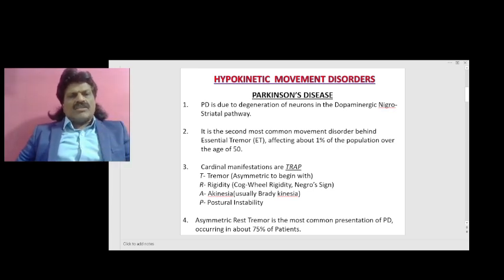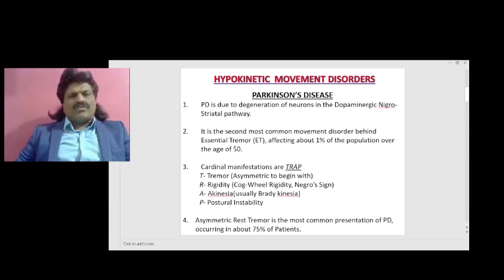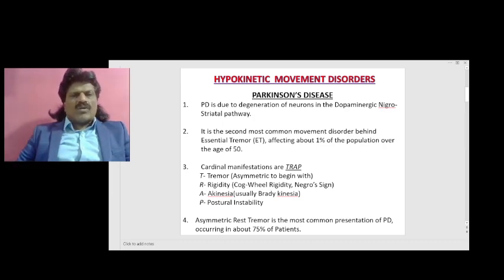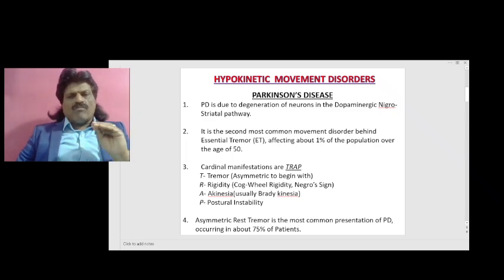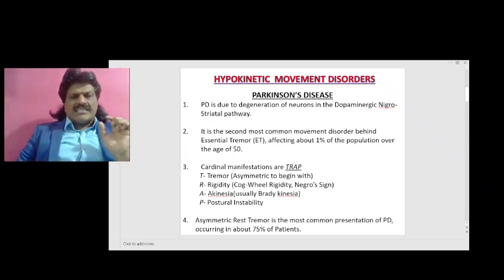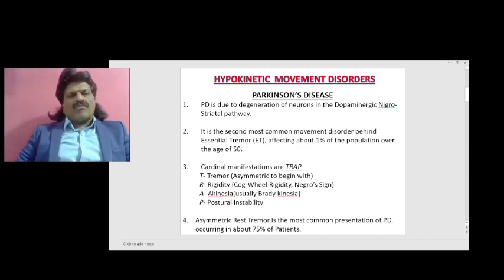Parkinson's disease is due to degeneration of neurons in the dopaminergic nigrostriatal pathway. It is the second most common movement disorder behind essential tremor, affecting about 1% of the population over the age of 50.